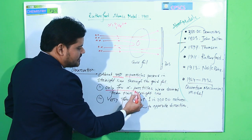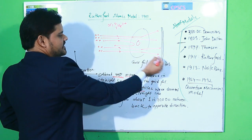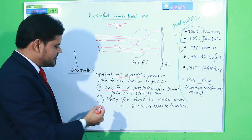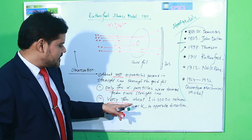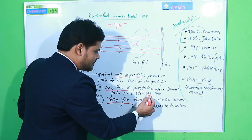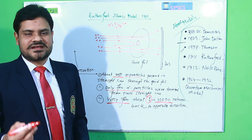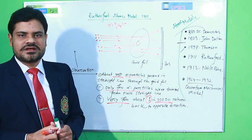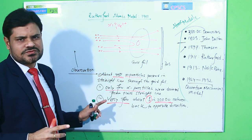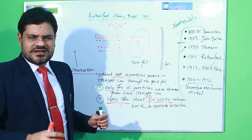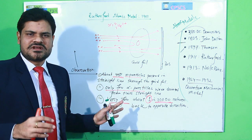Second, very few alpha particles were deviated from their straight-line path. Third — and most importantly — about one alpha particle from every 20,000 particles returned back in the opposite direction. These were the observations from Rutherford's experiment.